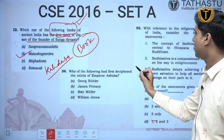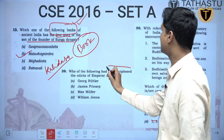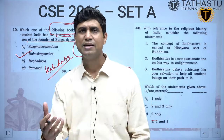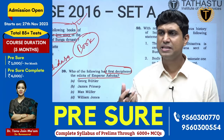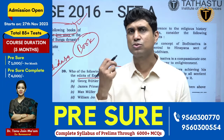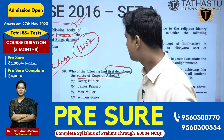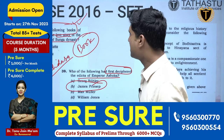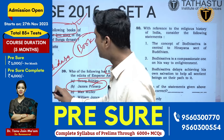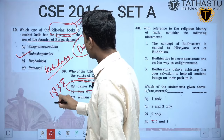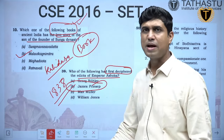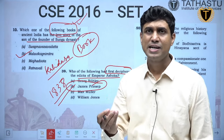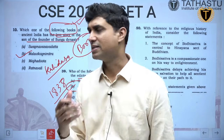Who first deciphered the edicts of Emperor Asoka? Asoka is another area from which UPSC repeatedly asks questions. James Prinsep in 1838 deciphered the Asokan Brahmi inscription for the first time, where it was written 'Devanaampiya' and 'Piyadassi'.